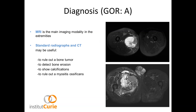We start with grade of recommendation A for diagnosis. For extremity soft tissue sarcoma, the main imaging modality is MRI. Standard radiographs and CT scanners may be useful to rule out bone tumor, detect bone erosion, or confirm an osseous tumor with a large soft tissue contingent. CT scanners are also needed to show calcifications — not visible on MRI — and to rule out myositis ossificans.